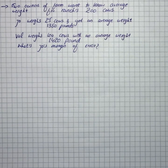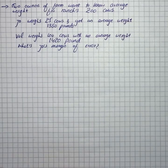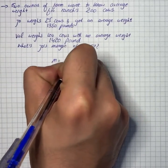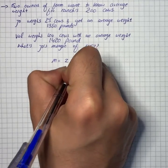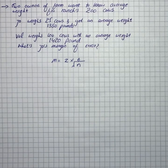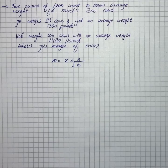What's Joe's margin of error? The margin of error formula is m equals z times sigma divided by the square root of n. Z depends on the confidence interval, so let's assume 95% as the confidence interval.